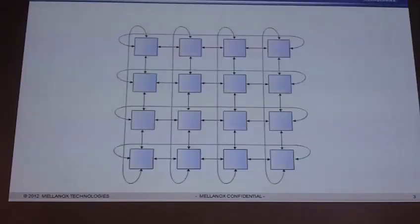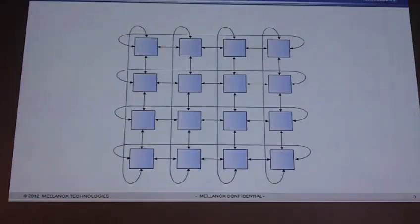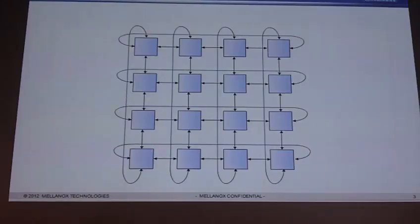So what is a 3D Taurus topology? I think it's easiest to look at a 3D Taurus by first looking at it in two dimensions — you can get your head wrapped around it a little better. A 2D Taurus is basically two dimensions, X and Y, of a bunch of different nodes. The nodes talk to each other by communicating in the X direction and then up in the Y direction.